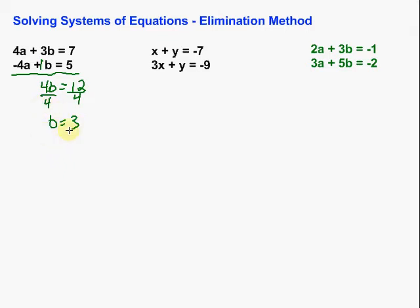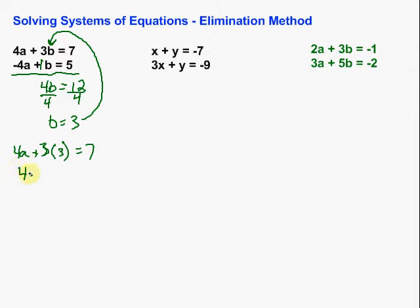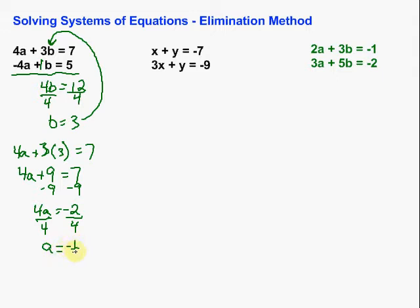Now to get the a, we've got our b, so we can take that 3 and put it back into one of the equations for b. I'm going to put it in the top one. We've got 4a plus 3 times b, which is 3, equals 7. Now we solve for a — simplify first: 3 times 3 gives us 9, still equal to 7. To get a by itself, we get rid of the plus 9 by subtracting 9 on both sides. We're left with 4a equals negative 2.